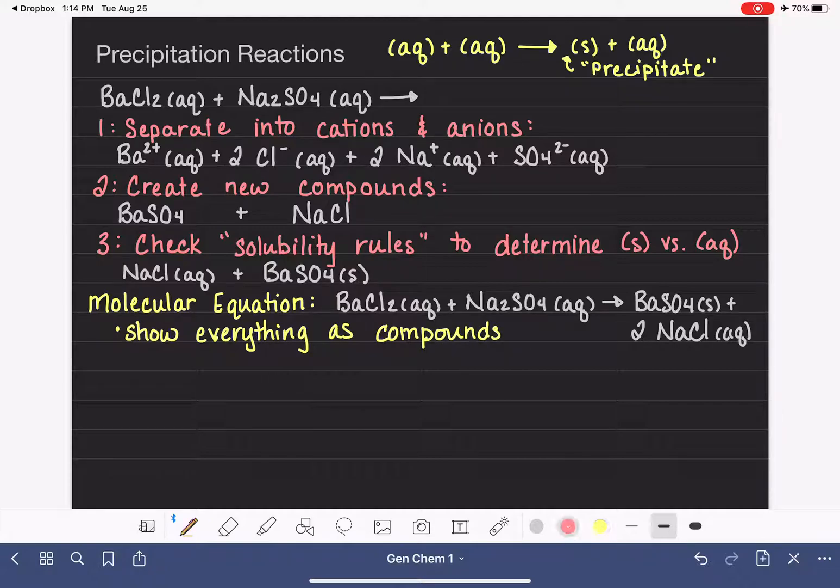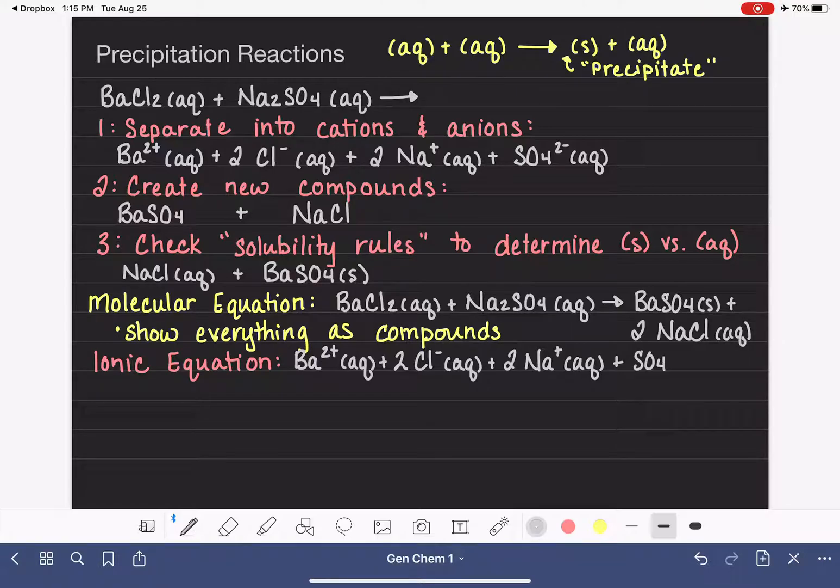Now, another version, another way that we could express a precipitation reaction, is with an ionic equation. And the ionic equation will look like this. Everything that is aqueous is going to be separated and written as cation or anion. And this time, we are going to include that stoichiometry all the way through. So the barium and the chloride, because it's aqueous, I'm writing it as cation and anion. And the sodium sulfate, because it's aqueous, I'm also writing as cation and anion.